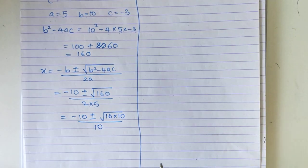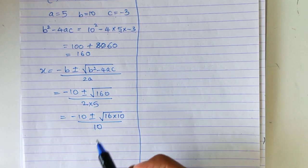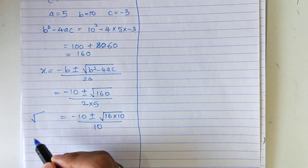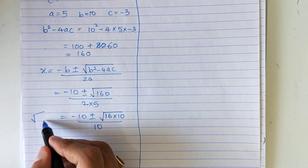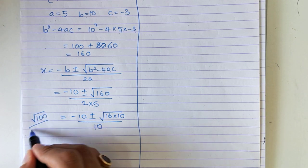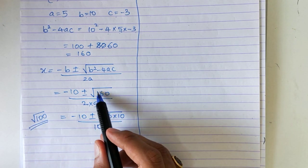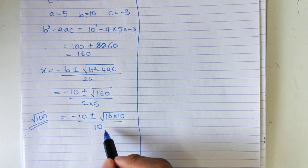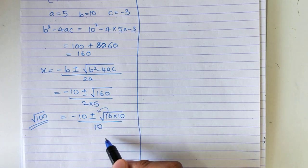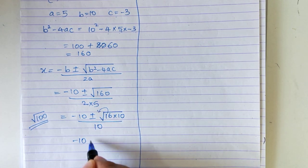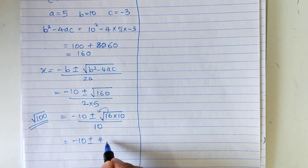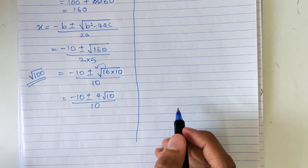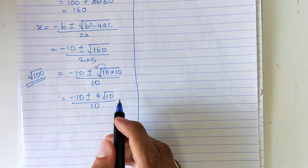So minus 10 plus minus — root 160 can be written as 16 into 10. I told you that behind your textbook you will get values of square roots from 1 to 100, but 160 is greater than 100, so first you reduce it. Write it as 16 into 10, so 16 will come out and become 4.